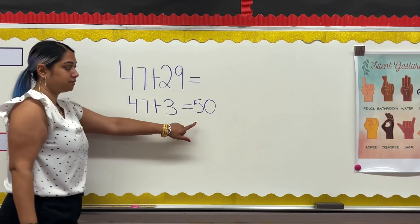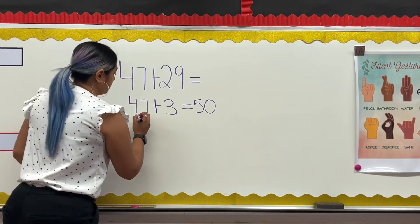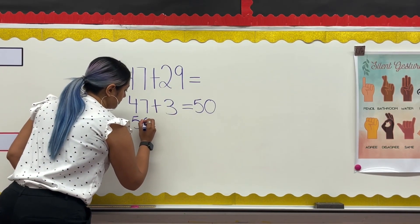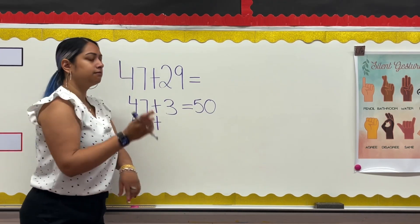I know I can add 3 to 47 to get to a group of 10. So I have added 3 so far of my 29, which gives me 50.